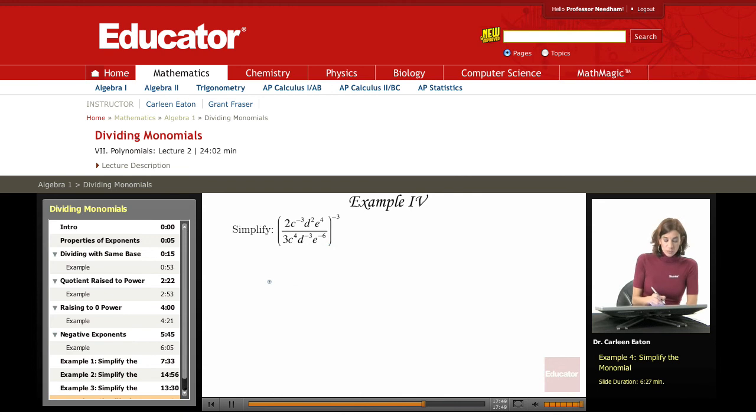And I'm going to do that by using my rule for dividing. I have the same bases C, two D's, and two E's. Just subtract the exponents to divide those terms.